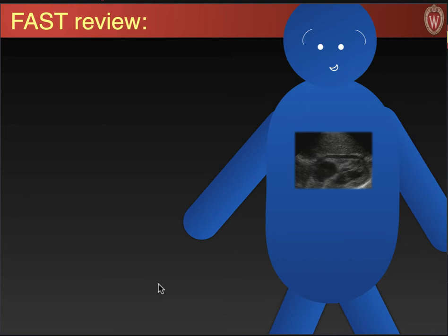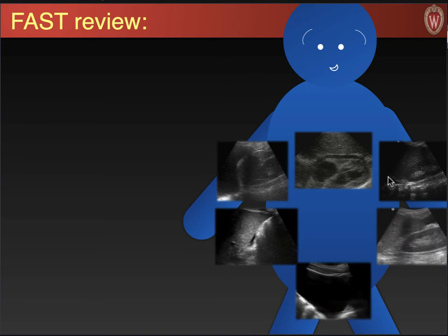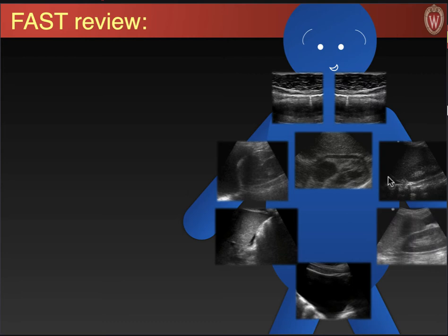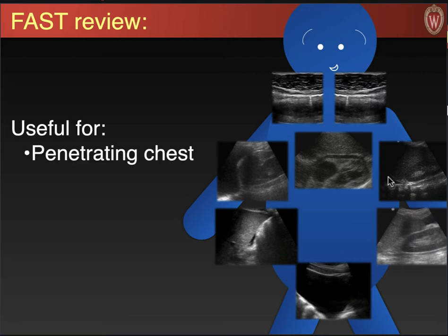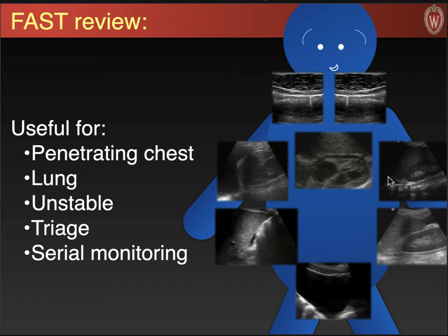The FAST exam consists of pericardial views, right upper quadrant abdomen — make sure you tilt that probe up towards the patient's shoulder to catch the hemithorax — the left upper quadrant with the same tilt, and then the suprapubic view. You can use this for penetrating chest trauma, lung injuries, medical lung issues, and any unstable patient whether medical or traumatic. It's also useful for triaging complex patients with multiple simultaneous traumas, and for serial monitoring — sometimes it's worth repeating the FAST if you are concerned about a patient's stability.